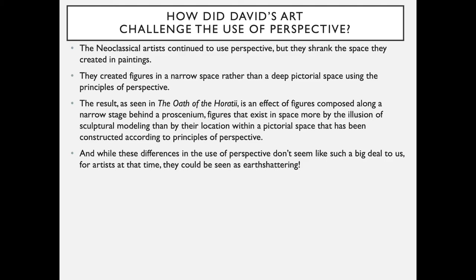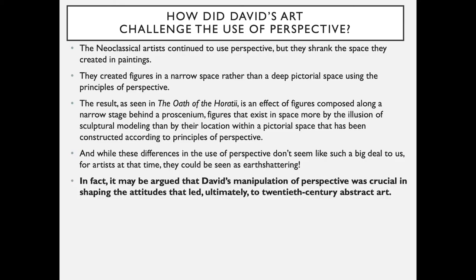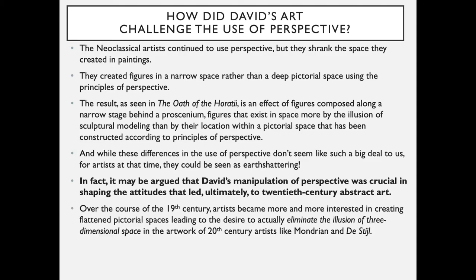While these differences in the use of perspective don't seem like a big deal to us, for artists at that time they could be seen as earth-shattering. It may be argued that David's manipulation of perspective was crucial in shaping the attitudes that led ultimately to 20th century abstract art. Over the course of the 19th century, artists became more and more interested in creating flattened pictorial spaces, leading to the desire to eliminate the illusion of three-dimensional space in the work of 20th century artists like Mondrian.